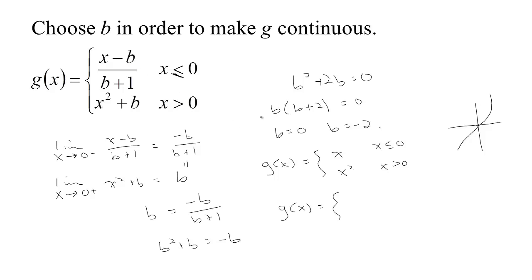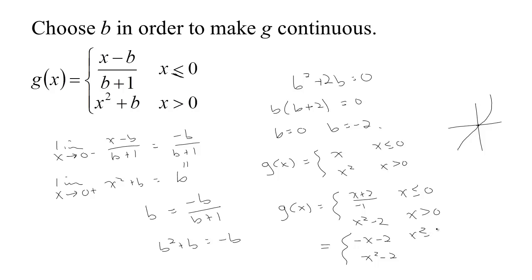The other choice is b equals negative 2. Then x minus negative 2 is x plus 2, and negative 2 plus 1 is negative 1 — so we'd use negative x minus 2 if x is less than or equal to 0, and x squared minus 2 if x is greater than 0. This is a line with y-intercept negative 2 and slope negative 1, paired with a downward-shifted parabola — and that's also continuous. So there are two ways to make that one continuous.